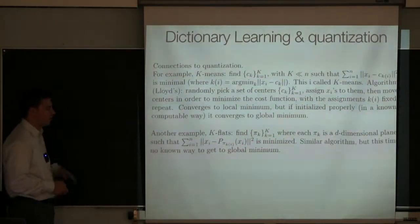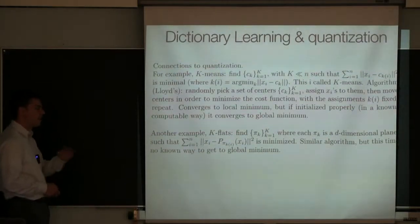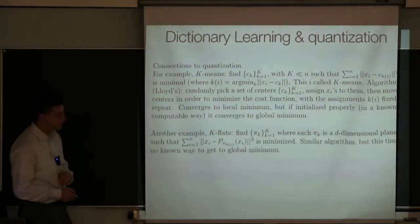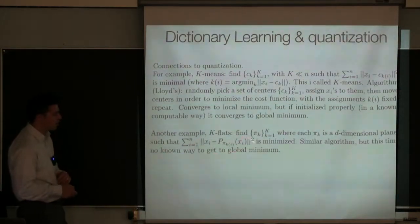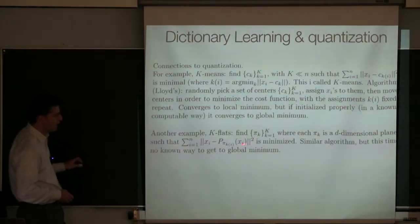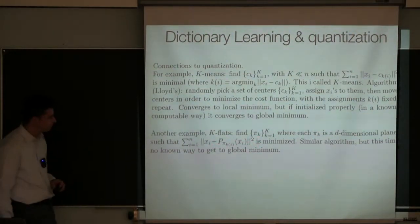The k-flats problem is solved by alternating algorithms like k-means, but unfortunately these algorithms — unlike k-means++ — are not guaranteed to converge to a global minimum. They typically converge to local minima, and there are plenty of local minima that are not all equivalent in terms of cost. So as of today, this is pretty much a nightmare to solve.